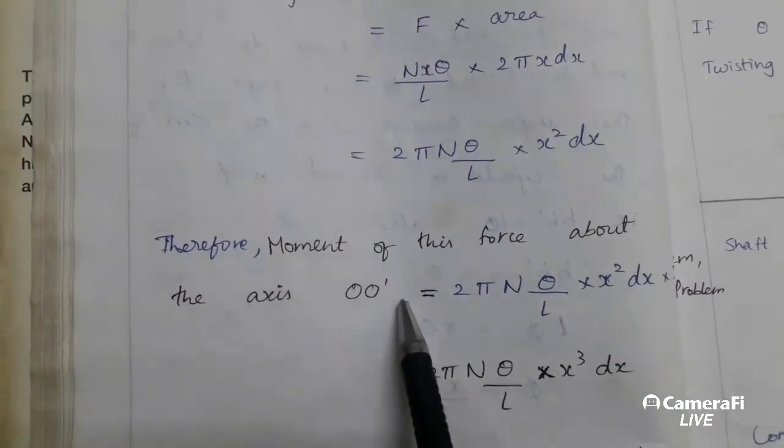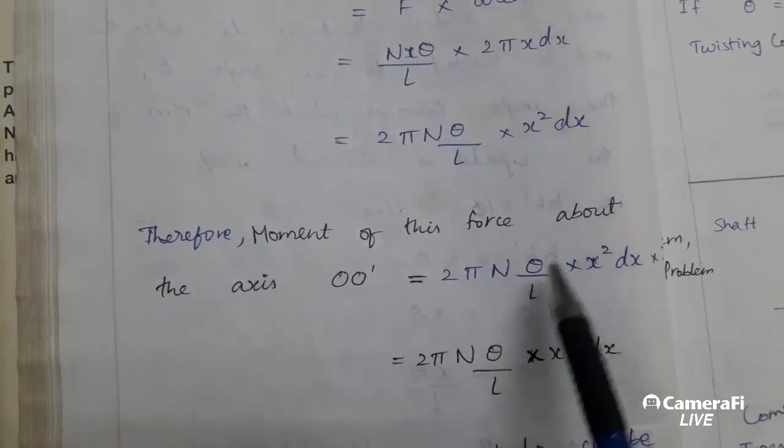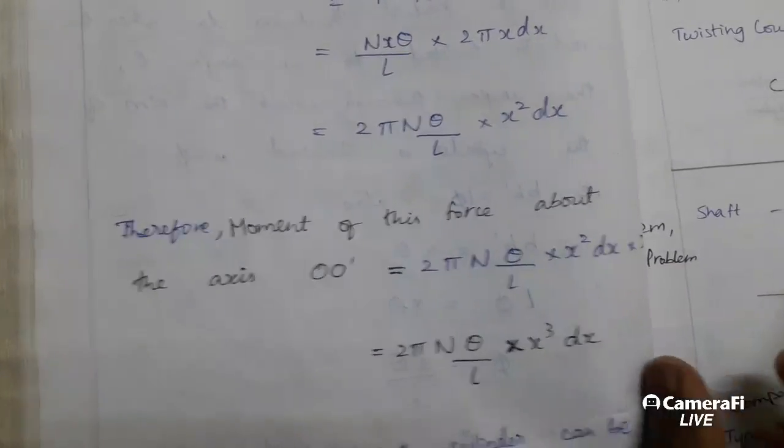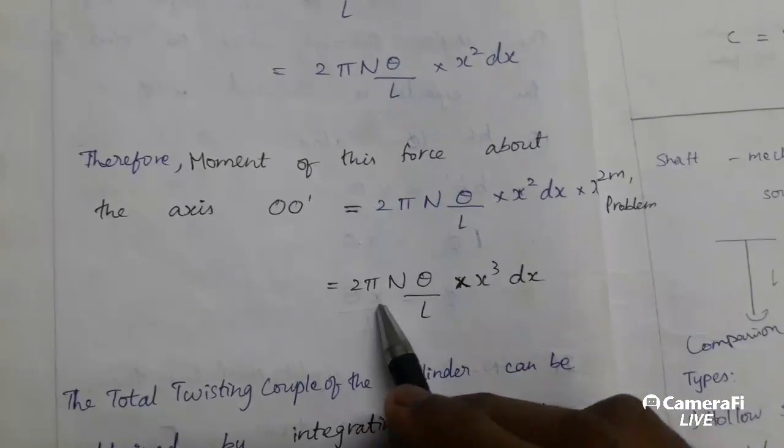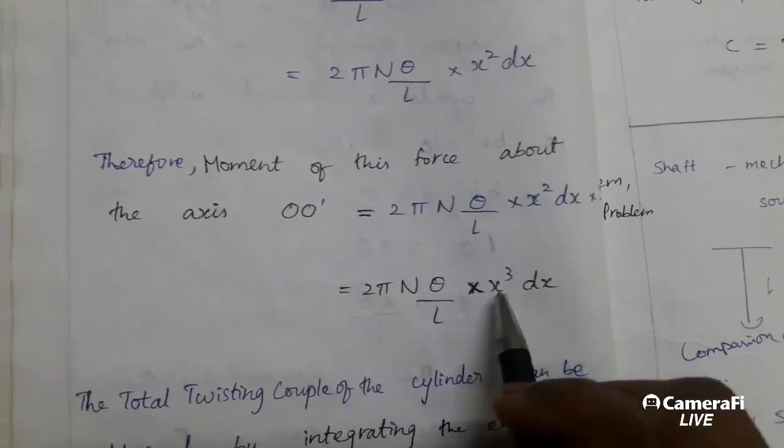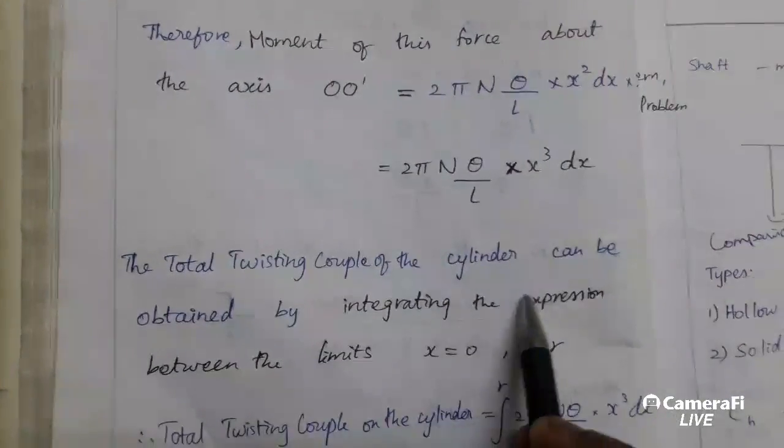Therefore, the moment of this force about the axis OO prime equals 2 pi N theta by L into X squared DX into X, which equals 2 pi N theta by L into X cubed DX.